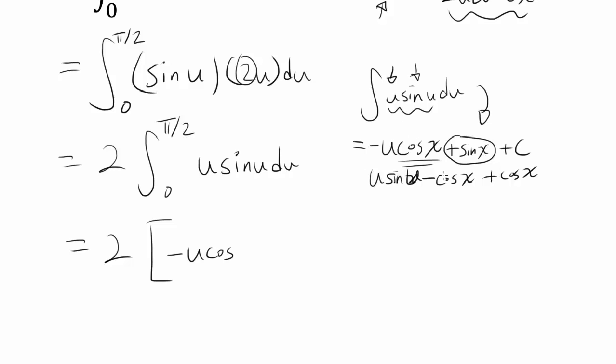We have negative u cosine of u. I'm not sure why I'm going back and forth between x and u. So let's change all of these to u. So we have negative u cosine of u plus sine of u. And we are going from 0 to pi over 2.